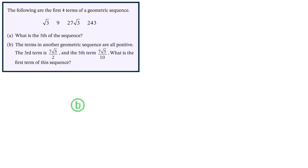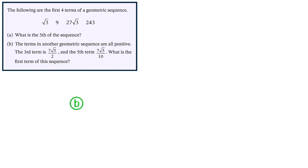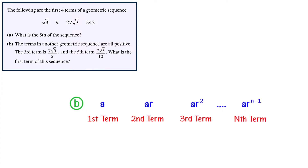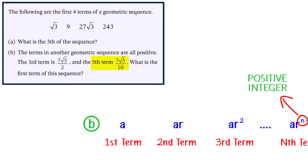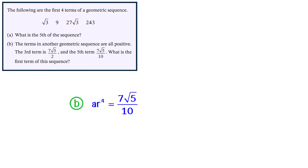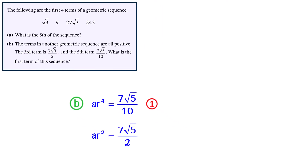That answers part A. For part B, we're told that the terms in another geometric sequence are all positive, the third term is 7 root 5 over 2, and the fifth term is 7 root 5 over 10, and we're asked to find the first term. If we represent the first term as A and the common ratio as R, then the first term is A, the second term is AR, the third term is AR squared, and so on. The nth term will be AR to the power of n minus 1. The fifth term gives us AR to the power of 4 equals 7 root 5 over 10 — call this equation 1. The third term gives us AR squared equals 7 root 5 over 2 — call this equation 2.